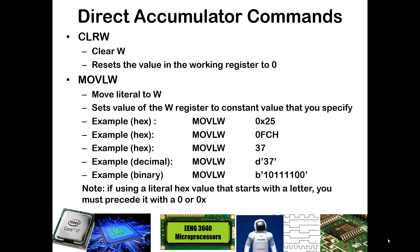You can put a constant value into W by using the MOVLW, which is short for move a literal into W. It's important to note that different values can be represented in several bases. So if you put 0x before a value, it's interpreted as hexadecimal.